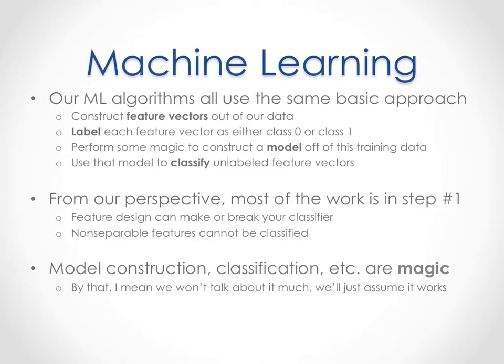Almost all machine learning algorithms — certainly all the ones we'll talk about today — use the same basic approach: you take your data and transform it into what's called a feature vector. You label each feature vector as either class 0 or 1, then perform some kind of magic to construct what's called a model from this training data. Once we have that model, we can use it to classify other feature vectors as either class 0 or 1. From our perspective, most of this work is in constructing feature vectors, because if you're using a machine learning library, the training and classification steps won't be much work at all — the library does it for you. The work is on us to decide what makes a good feature vector, what data to feed in, and what classes to use — and by classes I mean signal-present or signal-absent, not C# classes.